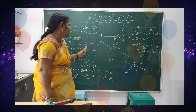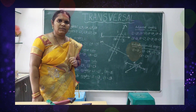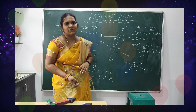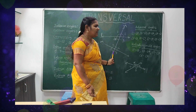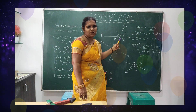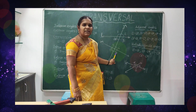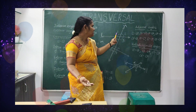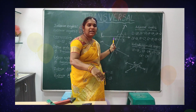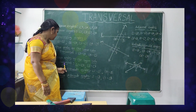How many pairs of corresponding angles do we have? One and five, two and six, three and seven, four and eight — four pairs of corresponding angles. Next type is alternate angles. Alternate means on either side of the transversal. Interior alternate angles: four and six are one pair, three and five are another pair — two pairs of interior alternate angles. Angles one and seven, and two and eight are exterior, so they are exterior alternate angles — two pairs.